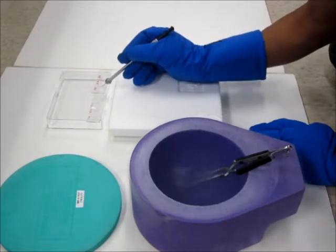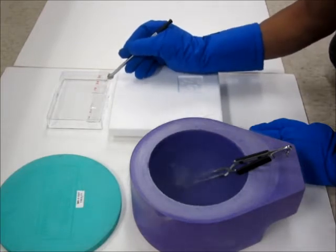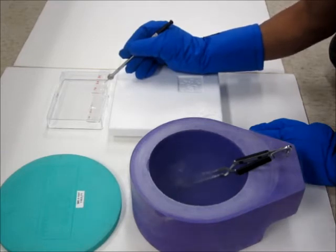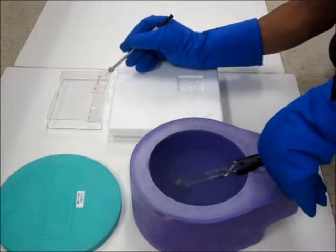Slowly transfer crystal to the first cryo buffer with the lowest amount of cryoprotection. Transfer it to the second cryo buffer with the higher concentration of cryoprotection. And then finally transfer to the third cryo buffer with the highest amount of cryoprotection.